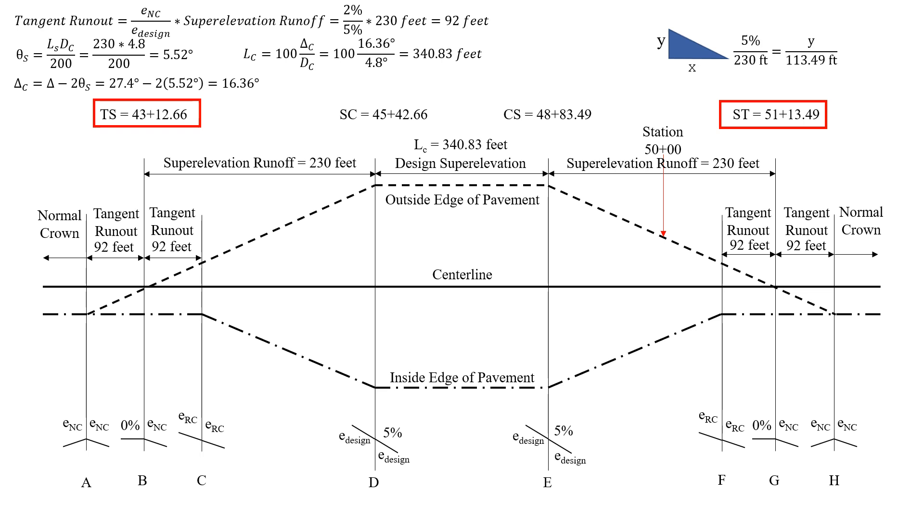Now we're going to look for our similar triangles. So the large triangle is going to be 230 feet on the base by 5% for our Y. So we're solving for Y here. The X value for our similar triangle is 113.49 feet. So we can solve this, and we're going to find a cross slope of 2.47% across both lanes for station 50.